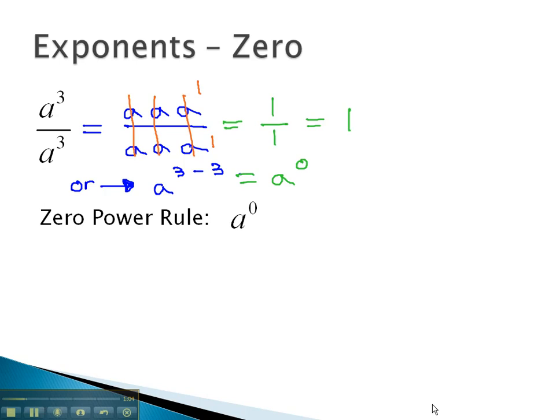Simplifying two different ways, we got a to the 0 for one answer and 1 for the other answer. This must mean a to the 0 and 1 are, in fact, equal to each other.